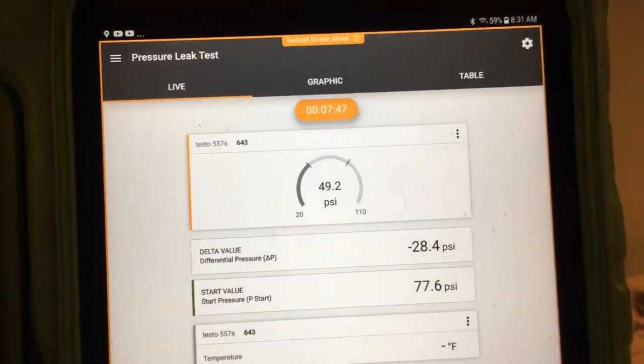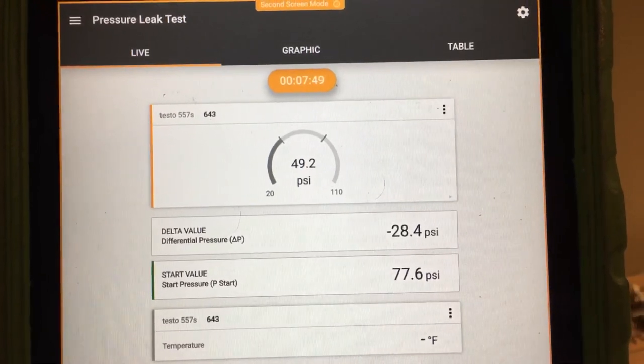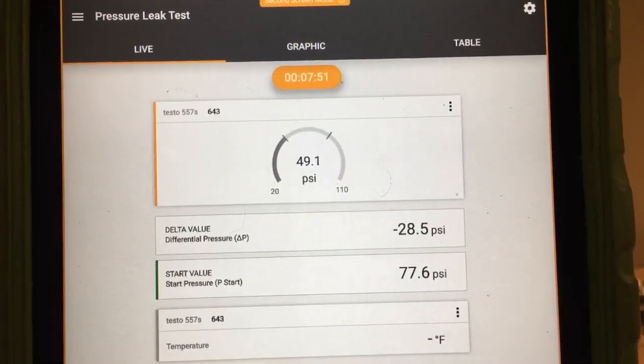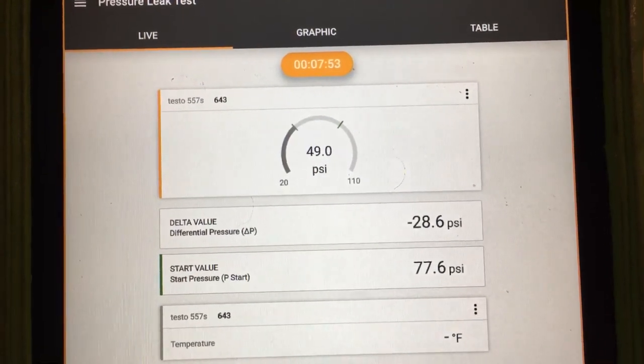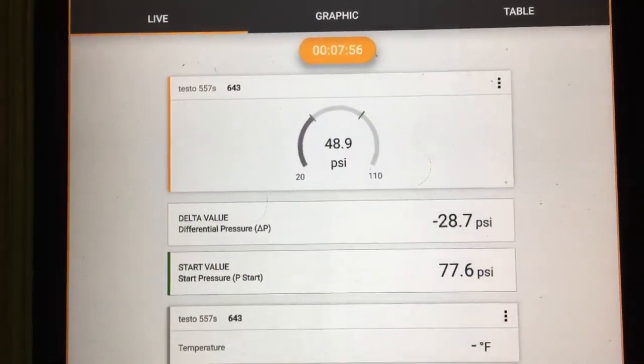Testo 557S. So this is the app and as you can see it says 49.2, now it says 49.1, 49. So why is the pressure falling? There's no leak.